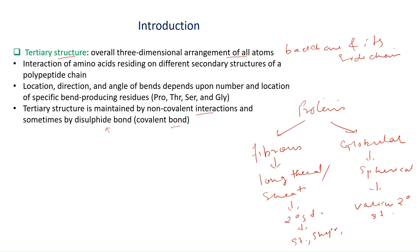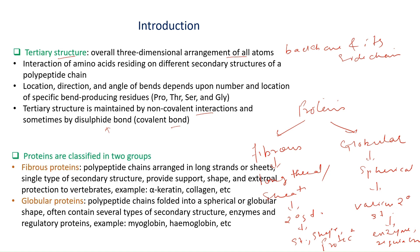Fibrous proteins are mainly used for maintaining the structure, shape, and the outer or protective layer of the body. Globular proteins are mainly enzymes and regulatory proteins. Examples of fibrous proteins include alpha keratin and collagen — proteins that provide support, shape, and protection. Examples of globular proteins include myoglobin and hemoglobin.